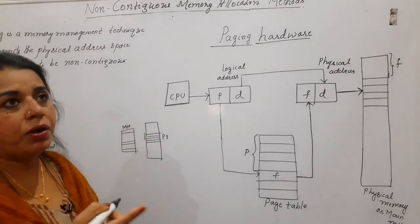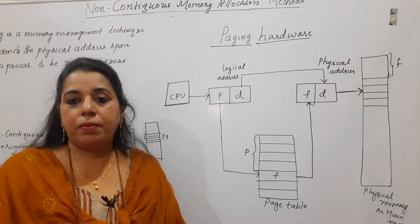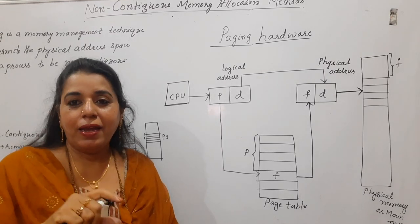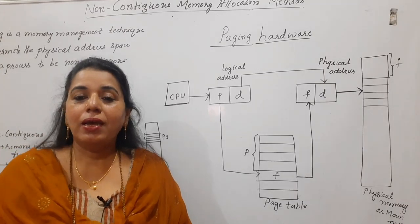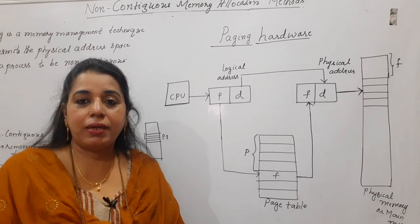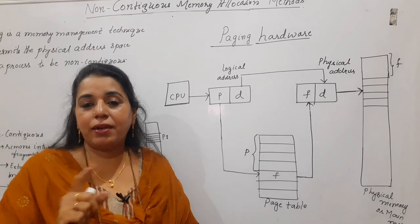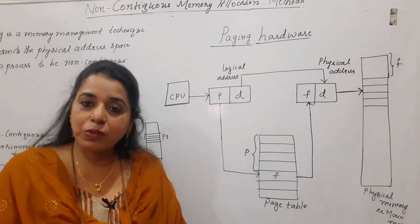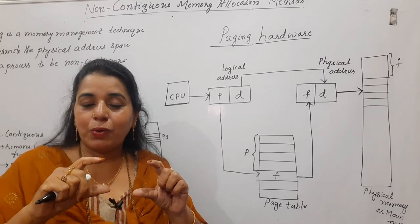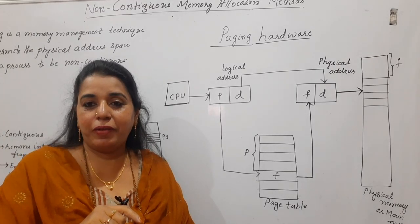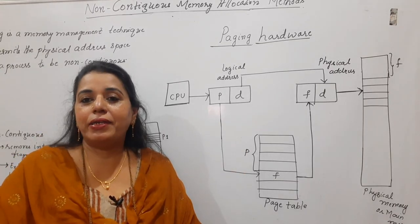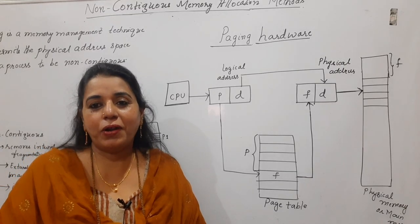That is why — because in the contiguous method, you get more internal fragmentation. If you try to place the process, the partition size is fixed, so some leftover space remains within the partition, and that leftover space is internal fragmentation. In the variable size partition method, you also have external fragmentation, which is more severe: you have enough space in memory but are still not able to allocate the process. Instead, here, whatever leftover space exists in main memory, you place some instructions of process P1, then wherever space is available you place another set of instructions. That is why it is not contiguous — we call this technique non-contiguous memory allocation.